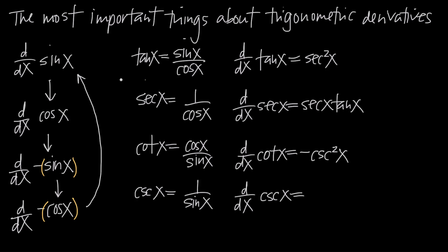The reason this is the most important thing to memorize is not only because you run into sine and cosine more than any other trigonometric functions, but because you can write all four other trigonometric functions in terms of sine and cosine. Tangent equals sine over cosine, secant equals 1 over cosine, cotangent equals cosine over sine, and cosecant equals 1 over sine.